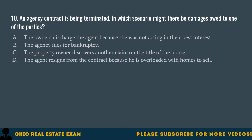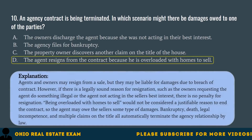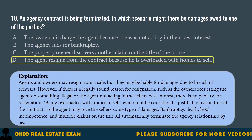Question 10. An agency contract is being terminated. In which scenario might there be damages owed to one of the parties? A. The owner has discharged the agent because she was not acting in their best interest. B. The agency files for bankruptcy. C. The property owner discovers another claim on the title of the house. D. The agent resigns from the contract because he is overloaded with homes to sell. The correct answer is D. Agents and owners may resign from a sale, but they may be liable for damages due to breach of contract. However, if there is a legally sound reason for resignation — such as the owner requesting the agent do something illegal, or the agent not acting in the seller's best interest — there is no penalty. Being overloaded with homes to sell would not be a justifiable reason. Bankruptcy, death, legal incompetence, and multiple claims on the title all automatically terminate the agency relationship by law.